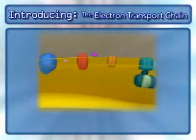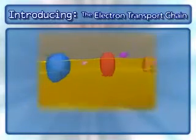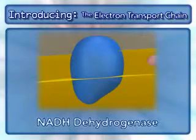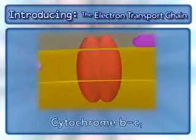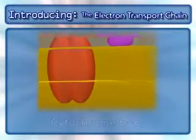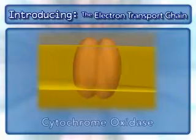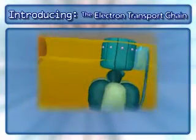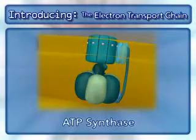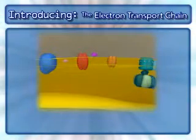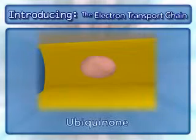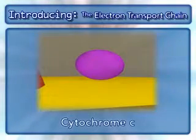The following complexes are found in the electron transport chain: NADH dehydrogenase, cytochrome BC1, cytochrome oxidase, and the complex that makes ATP, ATP synthase. In addition to these complexes, two mobile carriers are also involved: ubiquinone and cytochrome C.